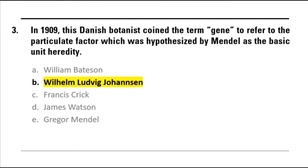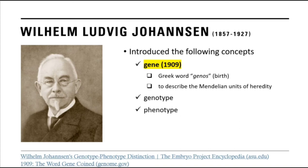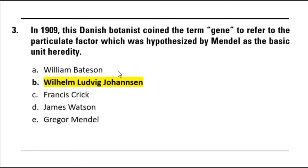The correct answer is Wilhelm Johansen. Wilhelm Johansen was a Danish botanist and geneticist who introduced several important concepts. In 1909, he coined the term 'gene' from the Greek word 'genos,' meaning birth, to describe the Mendelian units of heredity — which Grigore Mendel had called 'factors' or 'elementary factors.' He also described the concepts of genotype and phenotype. William Bateson was an English biologist who provided the classical definition of genetics and coined the terms homozygote, heterozygote, and allelomorph (or alleles). Francis Crick and James Watson were known for the double helix model of DNA. And Grigore Mendel is the father of genetics.